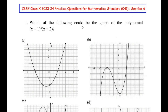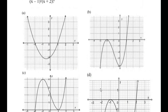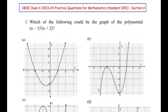Which of the following could be the graph of the polynomial: (x minus 1) squared times (x plus 2)? This is a question from the polynomials chapter and we have to find out, out of the given four graphs, which graph represents the given polynomial.